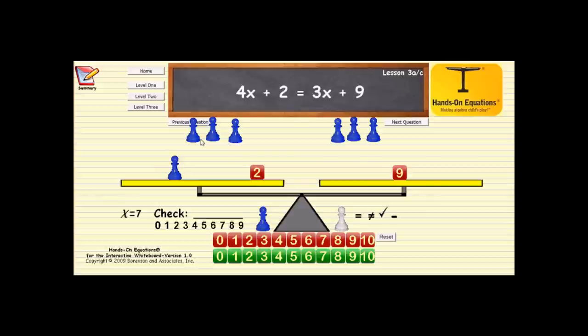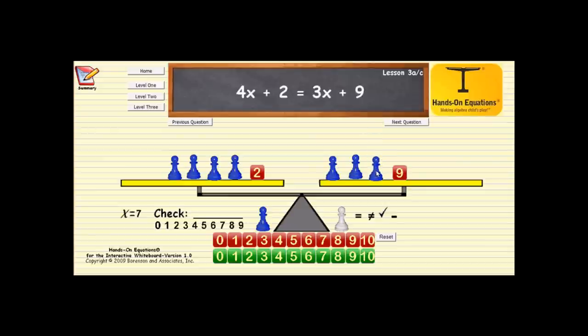To do the check we need to go back to the original physical setup. Let me place back onto the scale the items that we started with. 4x plus 2 equals 3x plus 9.